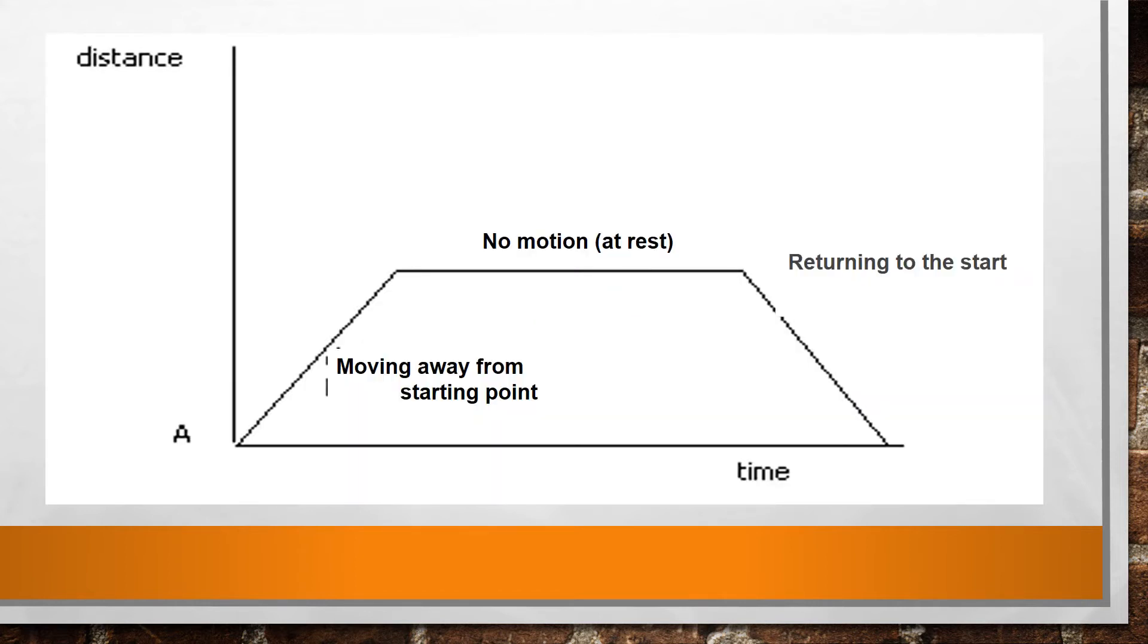If we put all three lines together, you could see distance-time graphs that look like this. We have an object moving away from its starting point before it stops for a while and then returns back to its original position. This could represent someone going to the grocery store to buy essential foods, staying at the store for a bit while they shop, and then returning home.